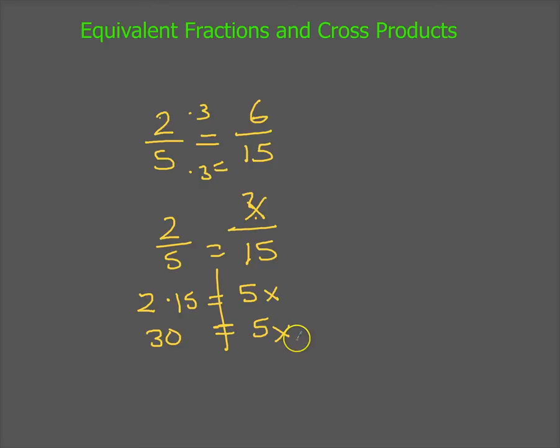And to get rid of this multiplication times the x, because I'm trying to get the x by itself, I'm going to divide and say it's really 30 divided by five, or six, just like I thought before.